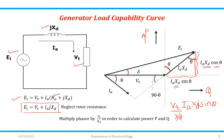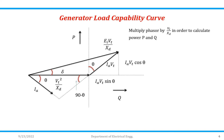After multiplying, the VT phasor becomes VT²/XT. The phasor IA·VT upon XT represents the scaled current. IA·VT·sin θ is nothing but your reactive power Q, and IA·VT·cos θ is represented as active power P.